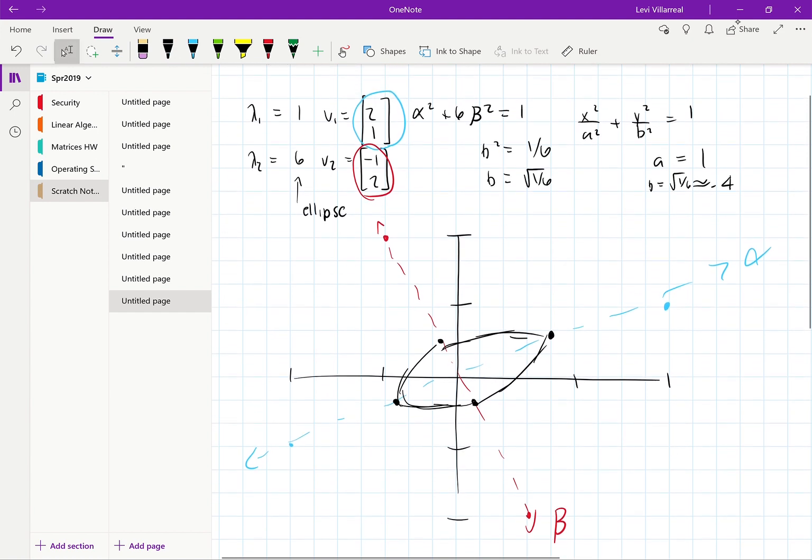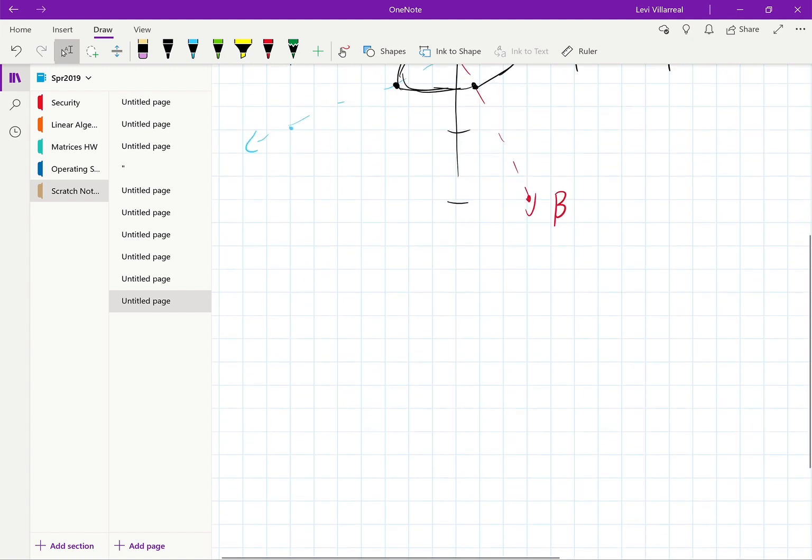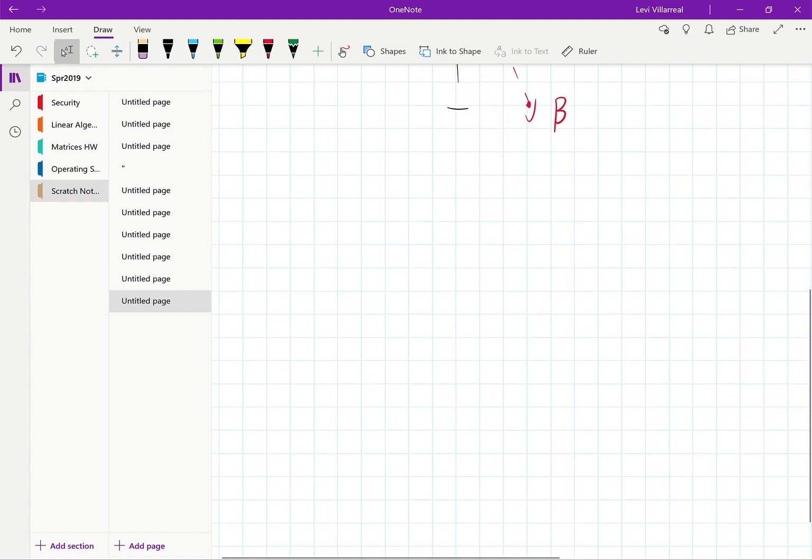Let's go ahead and walk through the other type of graph. So for this example, I'm just going to use another one from the review. So let's say the eigenvalues are 11 with corresponding eigenvector 3, 2. And then second eigenvalue is negative 2, corresponding eigenvector of negative 2, 3.